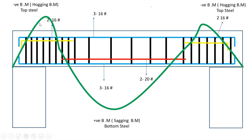That is the reason whenever you look at the drawing, you get more steel at the support — 16mm diameter three bars plus an extra 16mm diameter two bars — because hogging moment is created there. Similarly at the center you get 20mm diameter two bars and 16mm diameter three bars. Now another thing to understand is why stirrups are very closely spaced near the support but more widely spaced at 150mm center to center in the center portion.